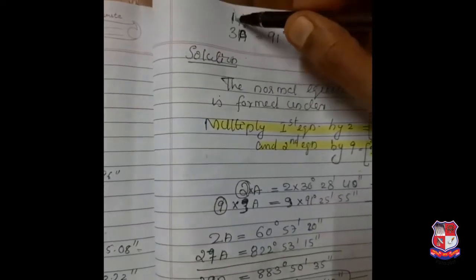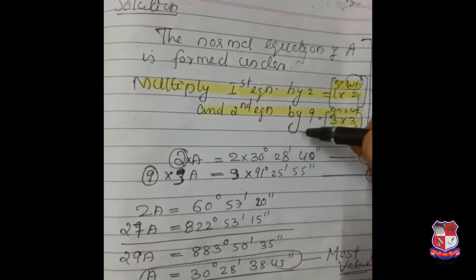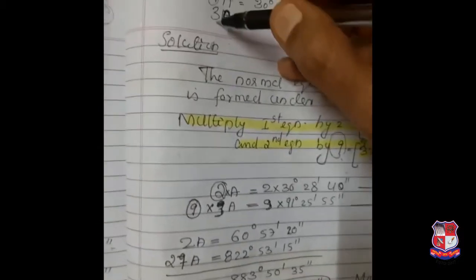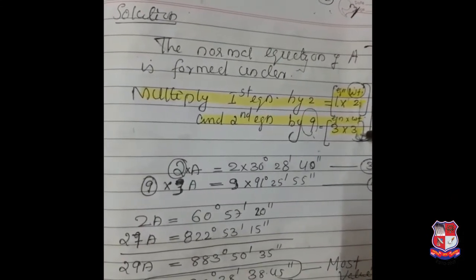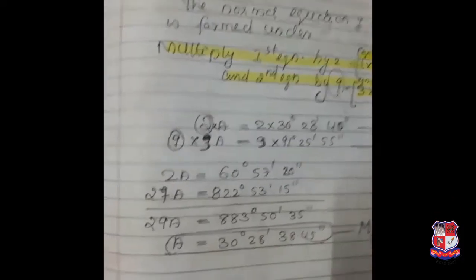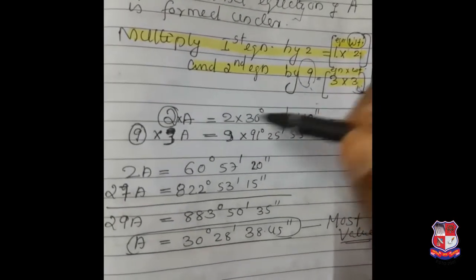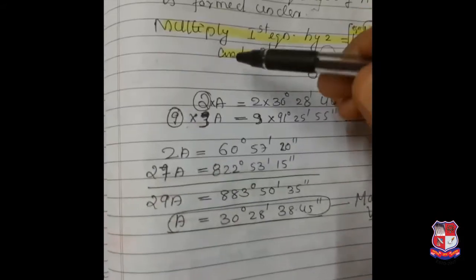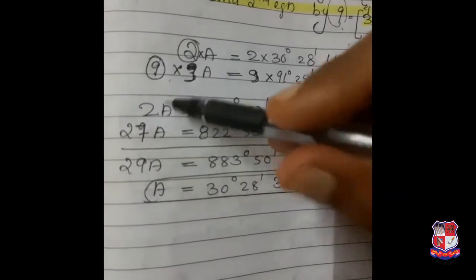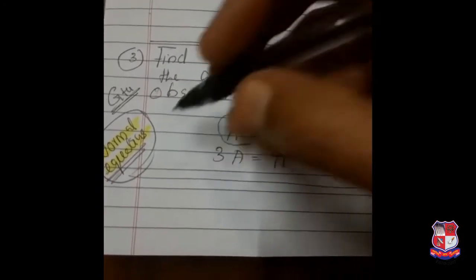The constant value for A — that is 1 — multiplied by the weight: 1 × 2 for the first equation. For the second equation, the coefficient of A is 3, multiplied by its weight 3 gives 9, so we multiply the second equation by 9. Multiplying: 2A equals a certain value; 27A equals another value. Add these two to find the value of A. This is the most probable value of A — it was asked in a GTU question.